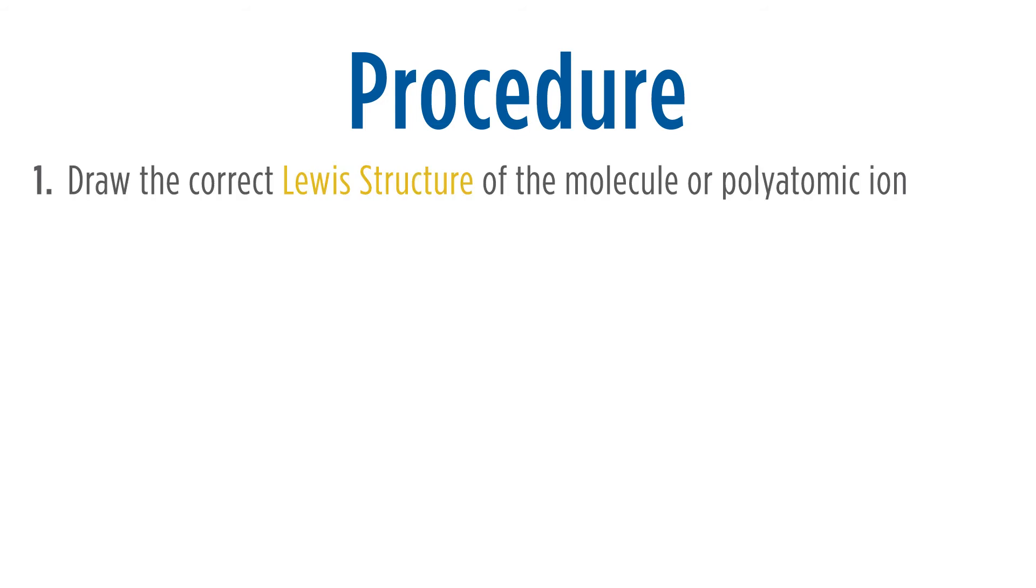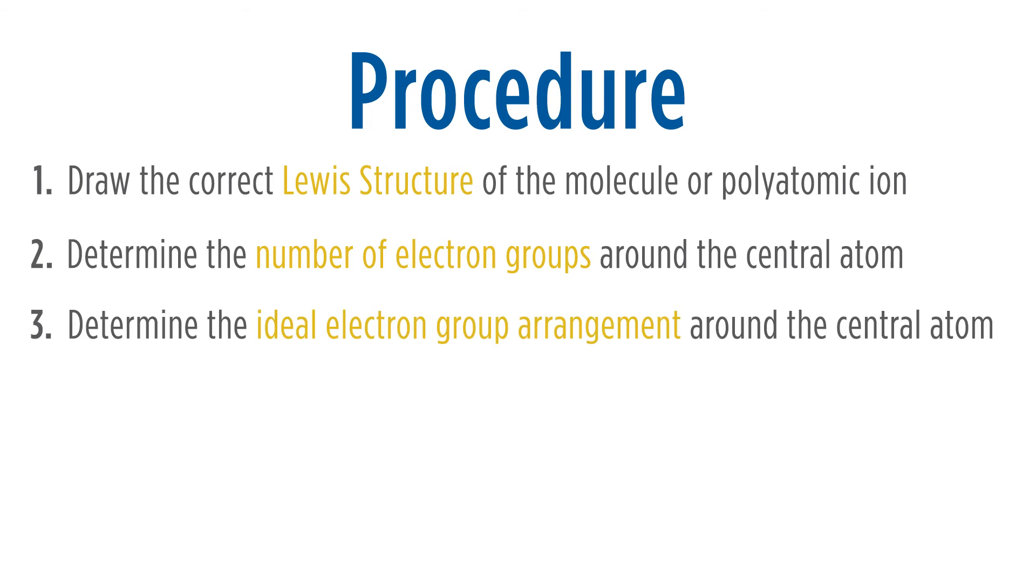First, draw the correct Lewis structure of the molecule or polyatomic ion. Second, determine the number of electron groups around the central atom. Third, determine the ideal electron group arrangement around the central atom.